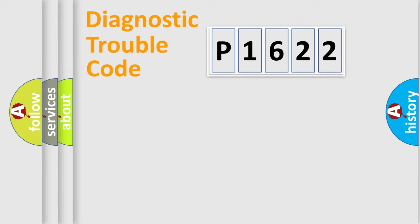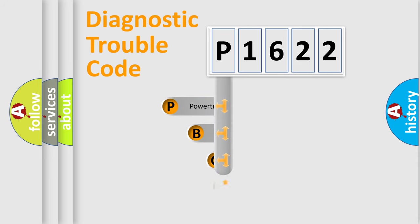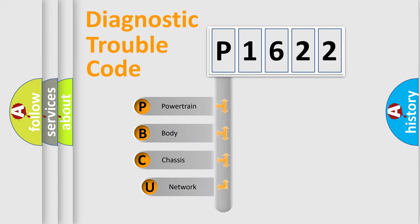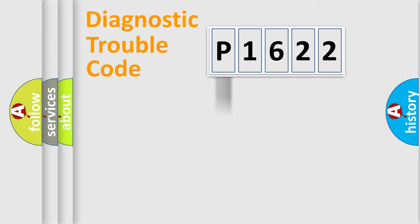First, let's look at the history of diagnostic fault code composition according to the OBD2 protocol, which is unified for all automakers since 2000. We divide the electric system of the automobile into four basic units: Powertrain, Body, Chassis, and Network.